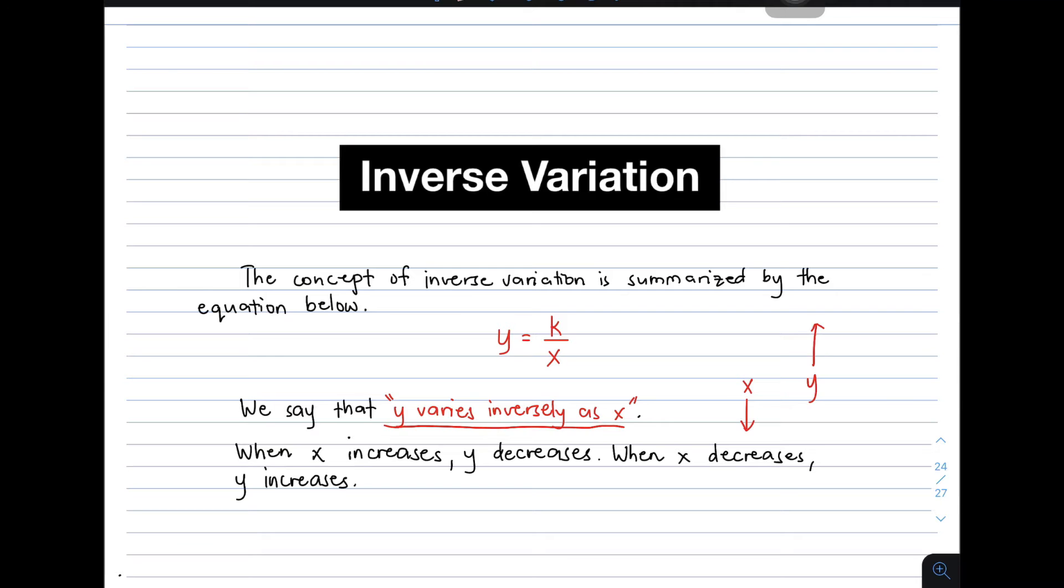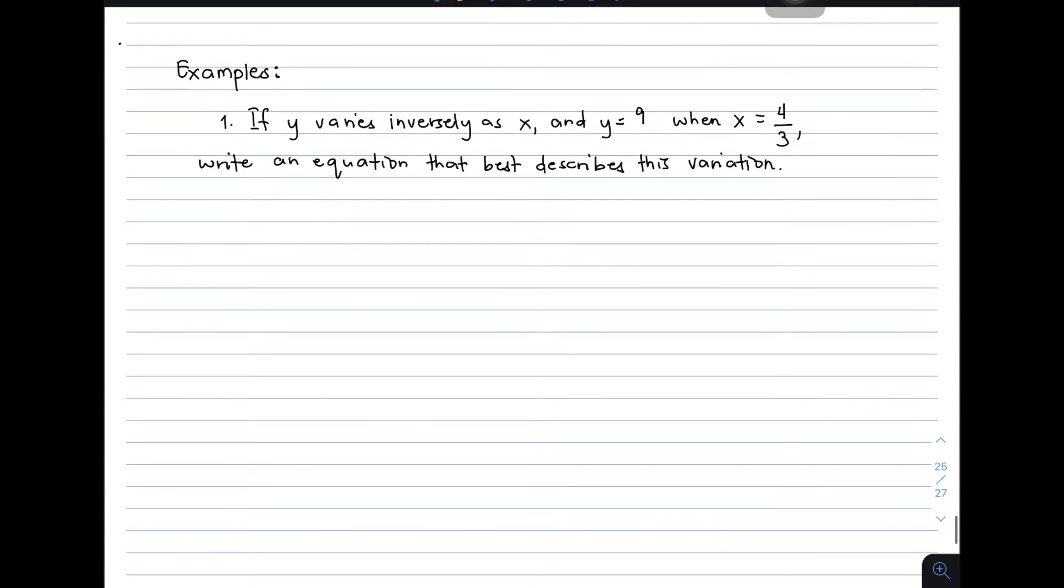So let's move on with our examples, para mas lalo nyo maintindihan about inverse variation. If y varies inversely as x, and y is equal to 9, when x is equal to 4 over 3, write an equation that best describes this variation. So in our first problem, we are asked for an equation. The phrase y varies inversely as x can be translated as y is equal to k over x.